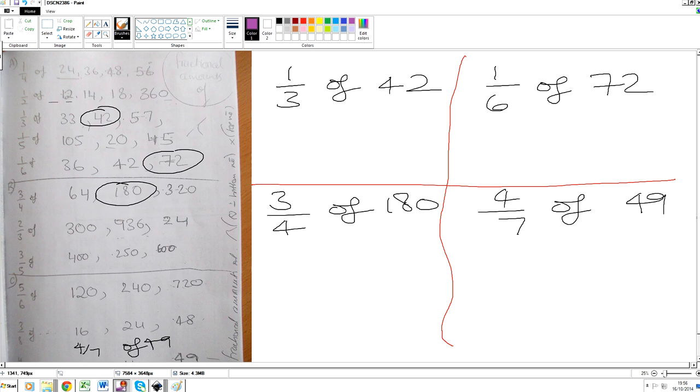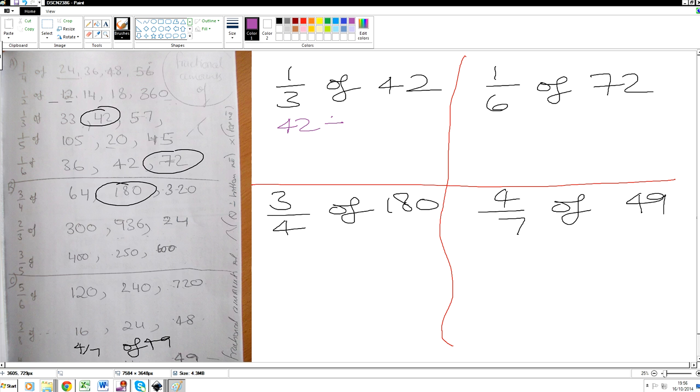Back to record mode. This is a question I gave you for classwork. 1 third of 42 means we're going to do 42 divided by the bottom number times it by the top number. What does that give us? 14. 1 sixth of 72 means 72 divided by the bottom number 6 and times it by the top number 1. It gives us 12.